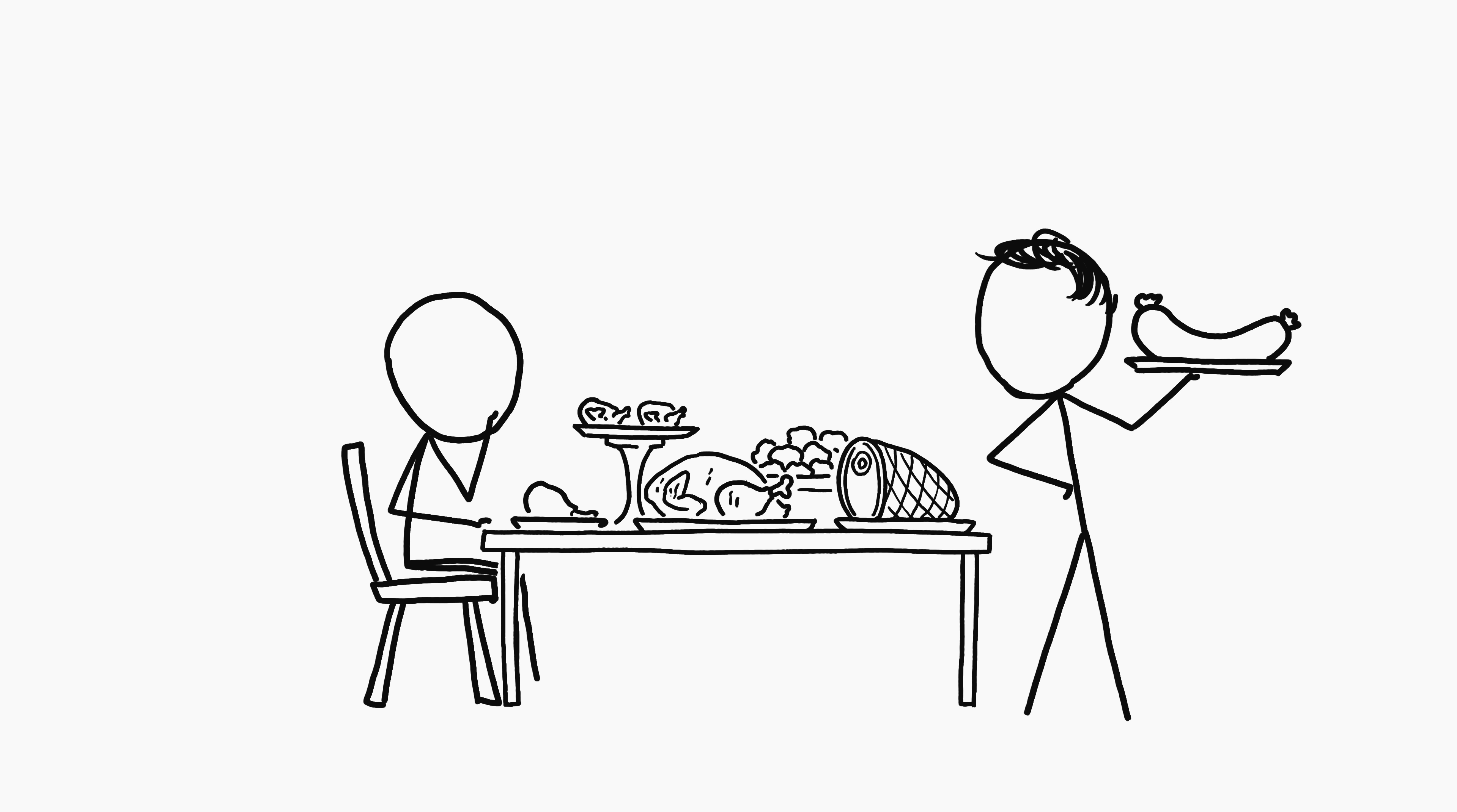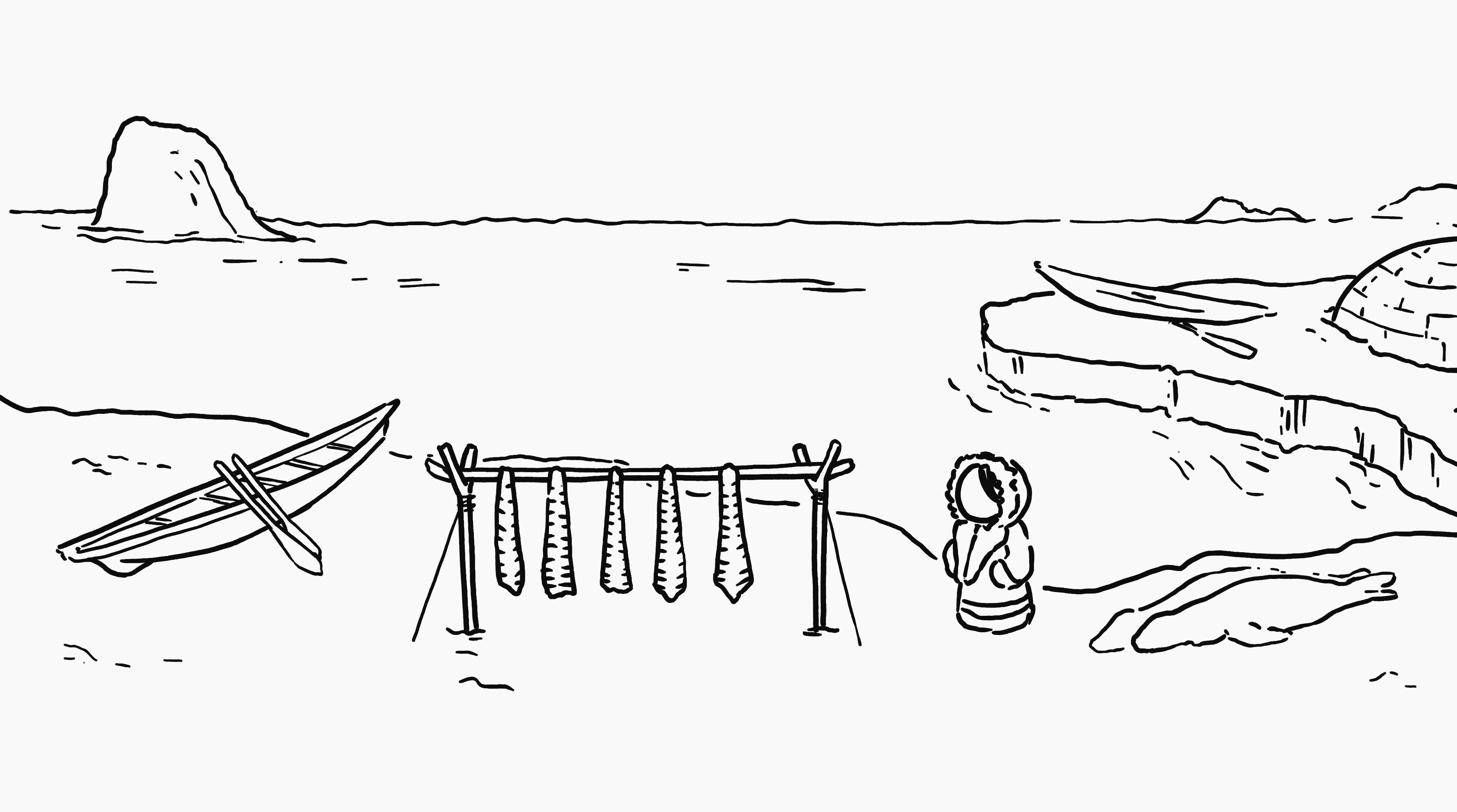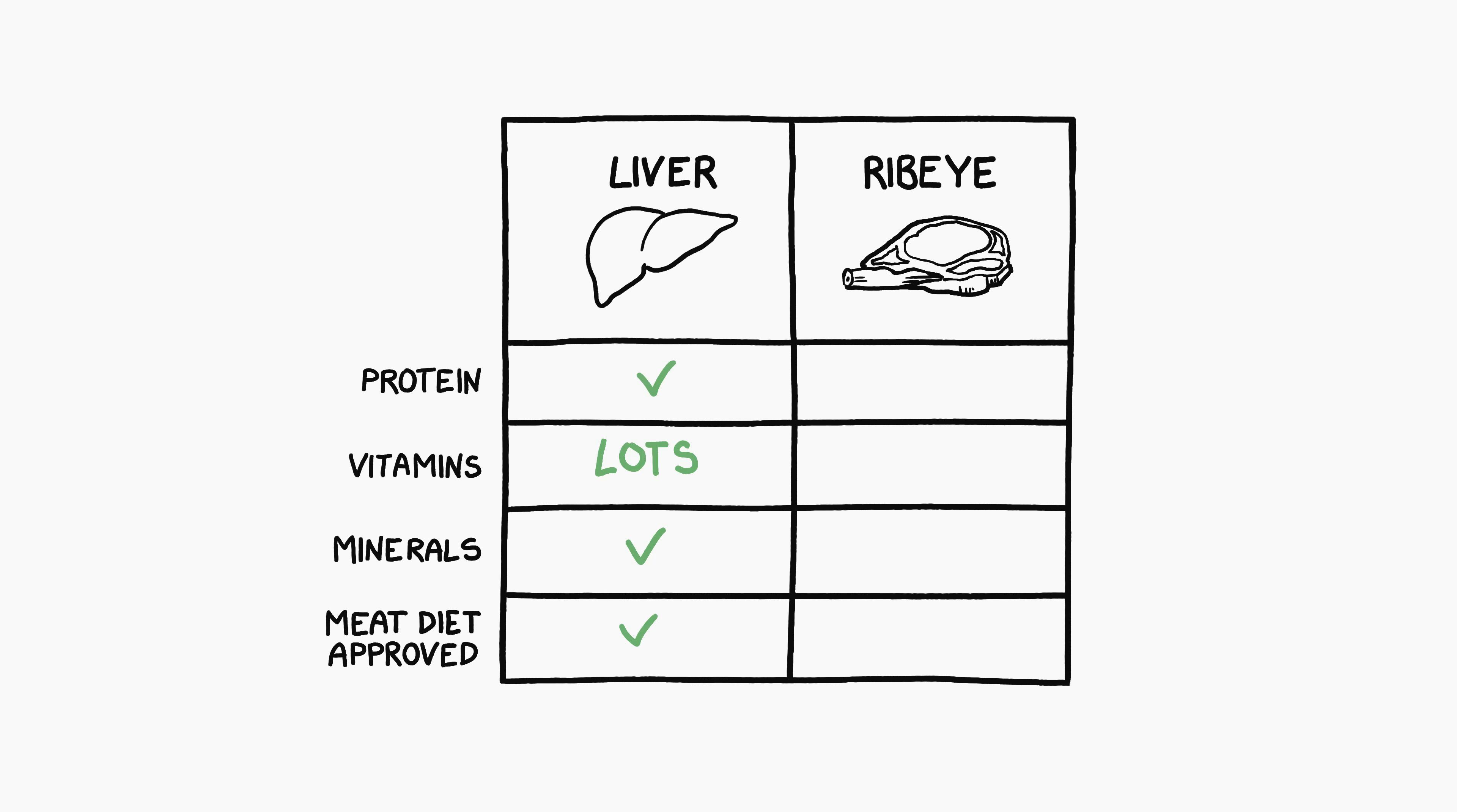Eating nothing but meat sounds bad nutritionally, but the lack of vegetables wouldn't necessarily kill you. Under some circumstances, people can survive on high-meat or all-meat diets, especially if they eat things like organ meat and bone marrow. There are some vitamins and nutrients found in those which are missing from the narrower range of mammal skeletal muscle and fat in the typical Western diet.